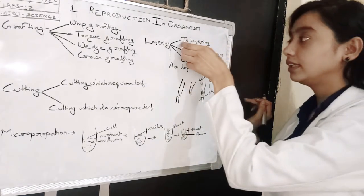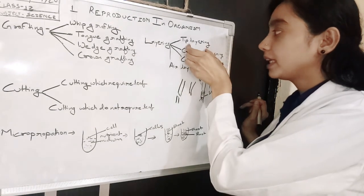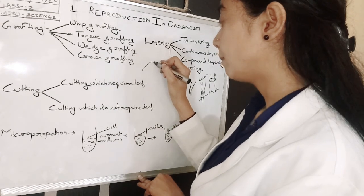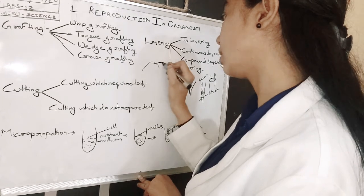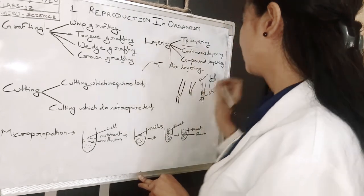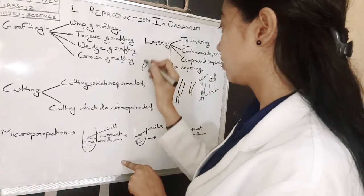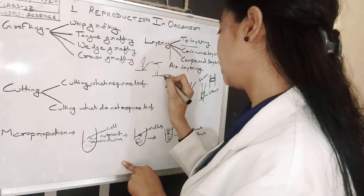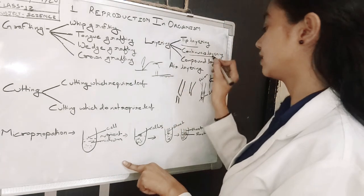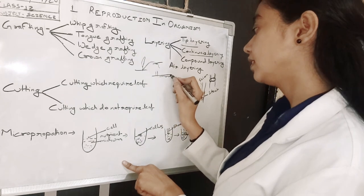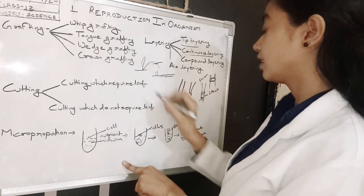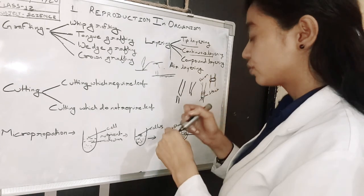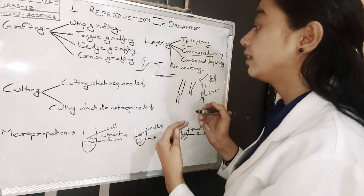Now let's discuss layering. Layering can be of different types. Tip layering - if you pull the tip of a branch inside the underground root, it is called tip layering. Continuous layering means the whole branch is underground in the soil. None of the portion is outside the soil - it is wholly in the underground region.